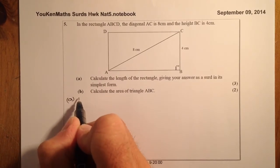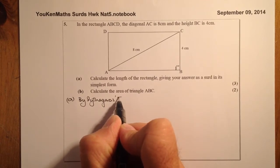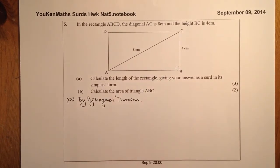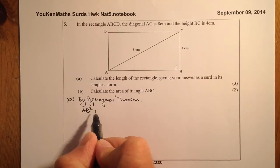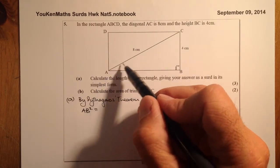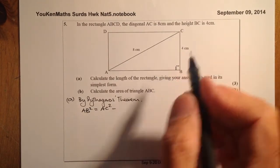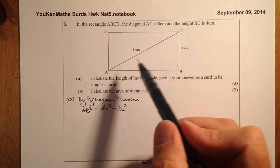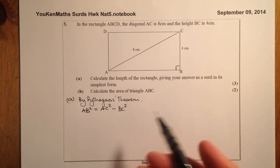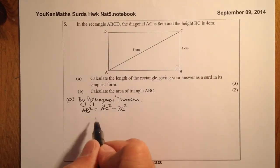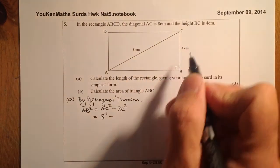So by Pythagoras' Theorem for part A, let's set up the equation. AB squared is going to be equal to AC squared minus BC squared, because I know the longest length — the hypotenuse of the triangle — so it's one of the other lengths, meaning it's going to be a subtraction. Let's get in some of the values: 8 squared minus 4 squared.